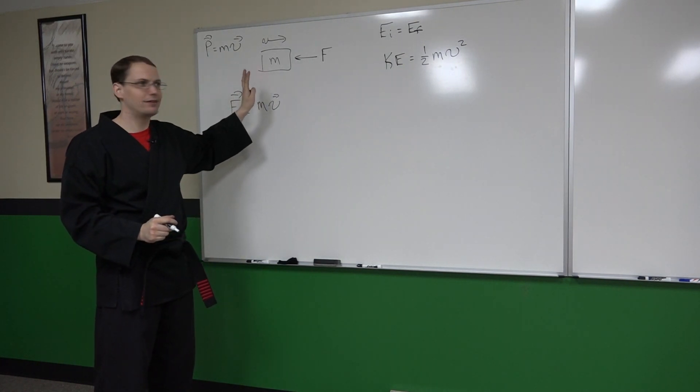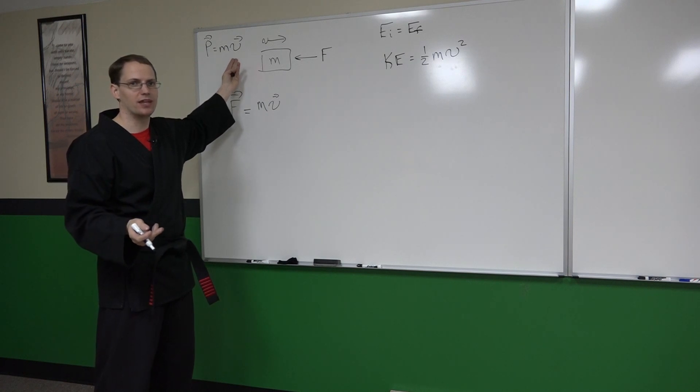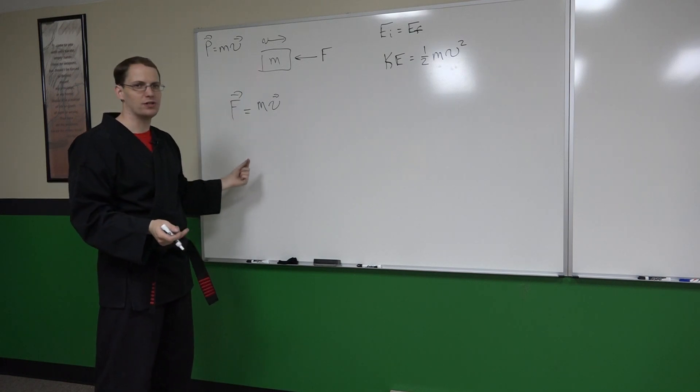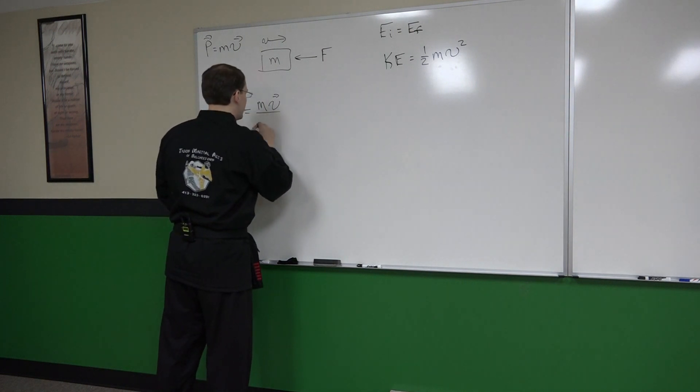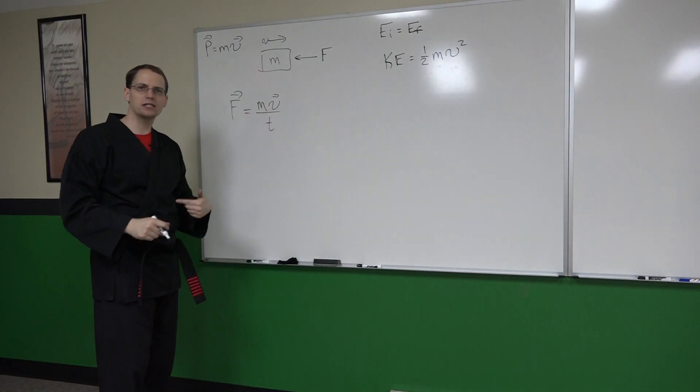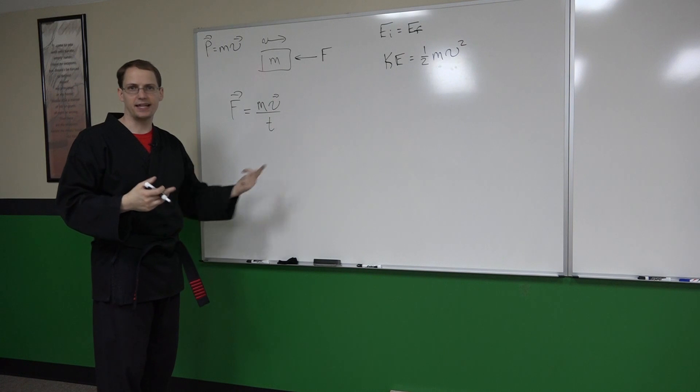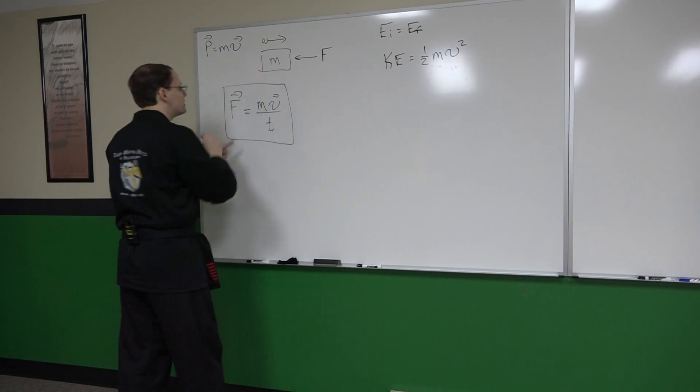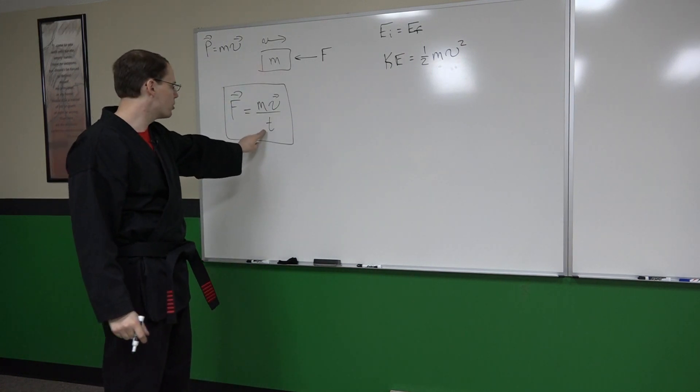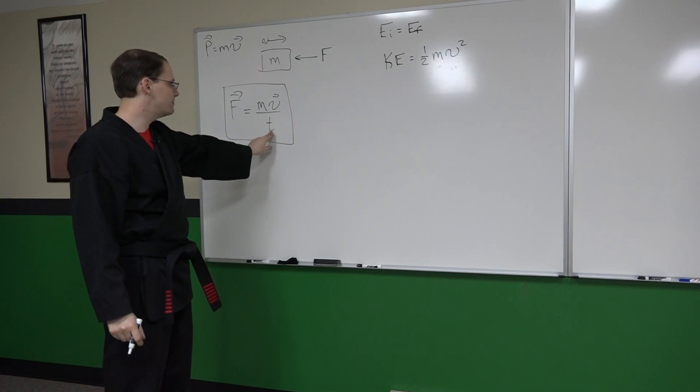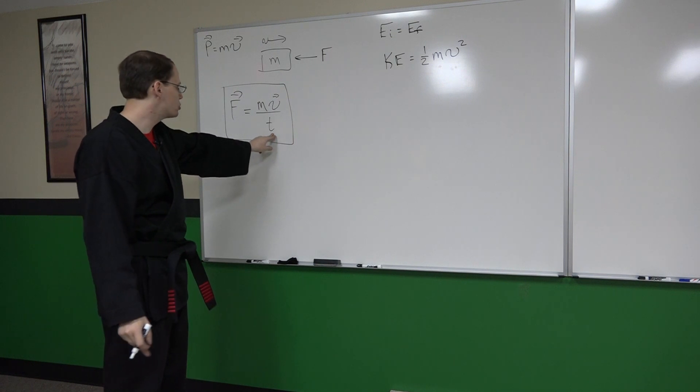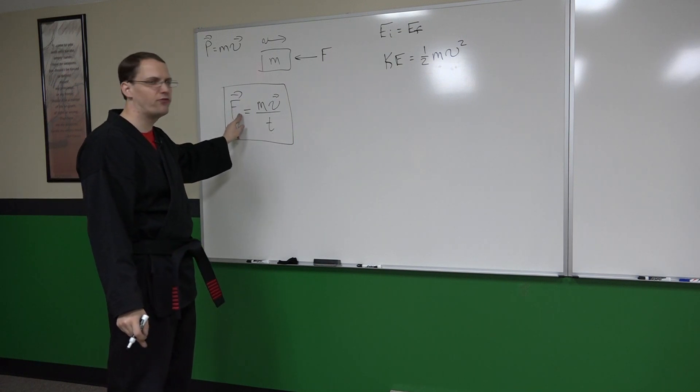We don't care about the negative sign that would be associated with that because we're just concerned with increasing the magnitude, the numerical value of this. So the force then is equal to the mass times the velocity divided by the time that that change took place. So we use this simple model to better understand the role of impact time and we discovered that time is something we can manipulate but we can't do so in a way that would increase this force.